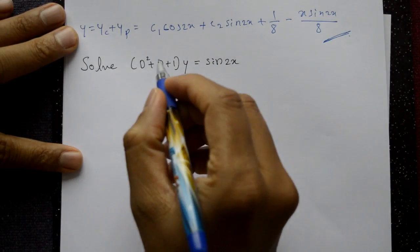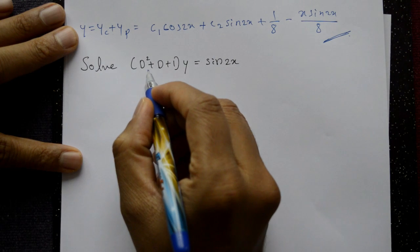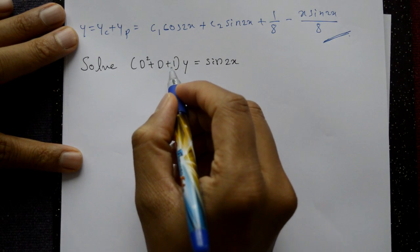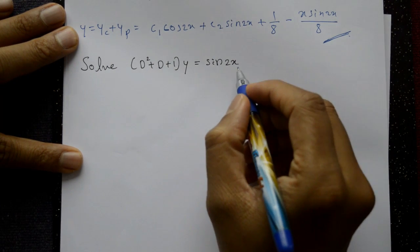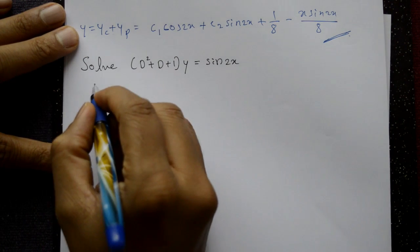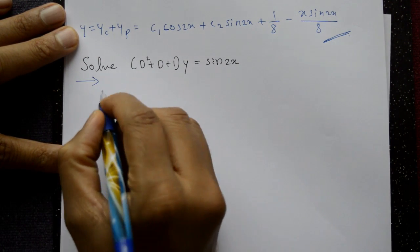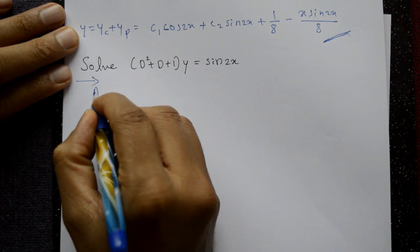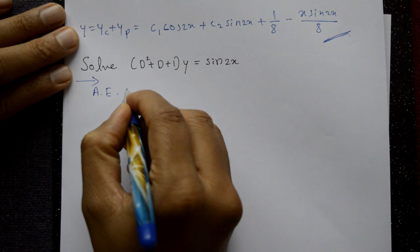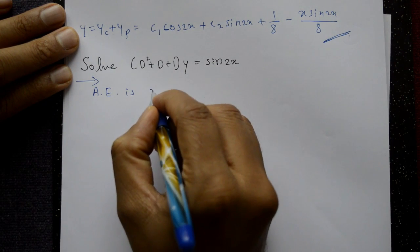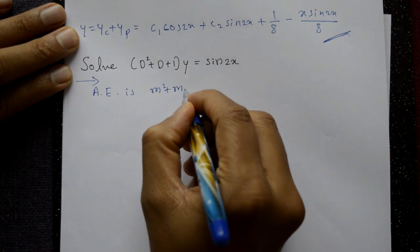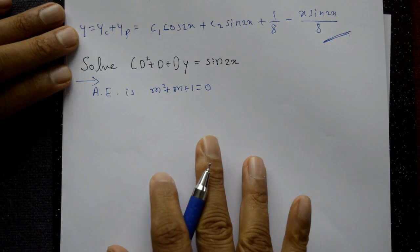Solve (D² + D + 1)y = sin2x. Now, the auxiliary equation is m² + m + 1 = 0.